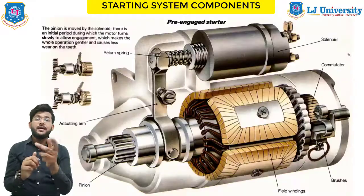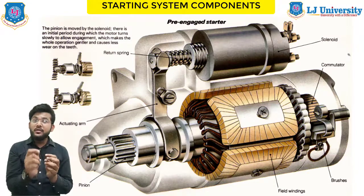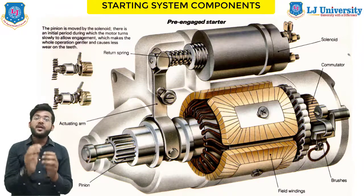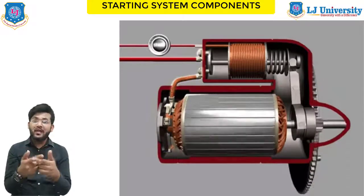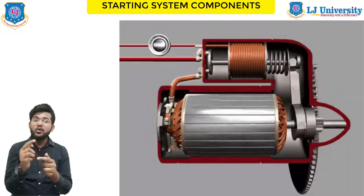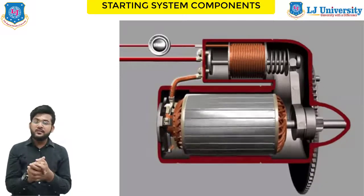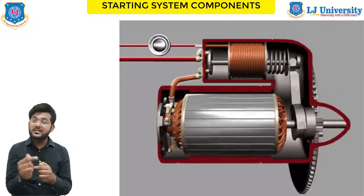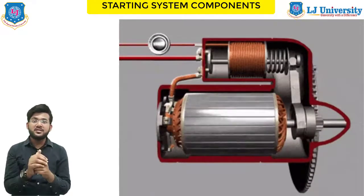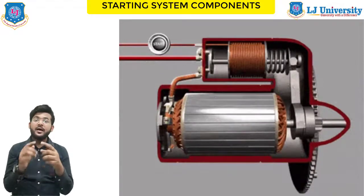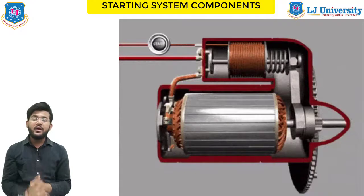The last component is the starter motor, which is the main component used to start the engine. It is a powerful electric motor with a small gear called a pinion attached to its end. When activated, the pinion meshes with a large ring gear attached to the engine flywheel. The starter motor then spins the engine so the pistons can draw in the fuel-air mixture, initiating combustion. When the engine spins faster than the starter, a device called an overrunning clutch or Bendix drive automatically disengages the starter gear from the engine. We will discuss the detailed working of the starter motor in upcoming sessions.